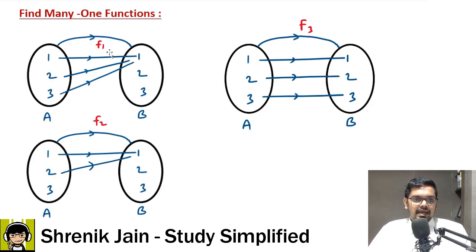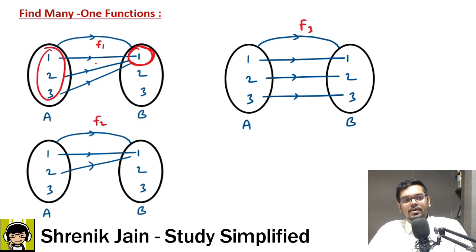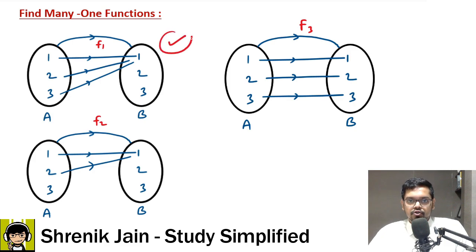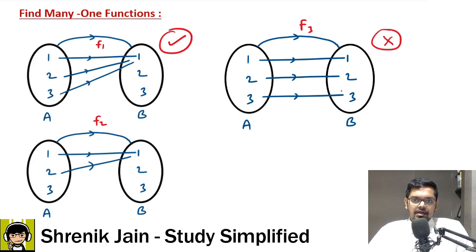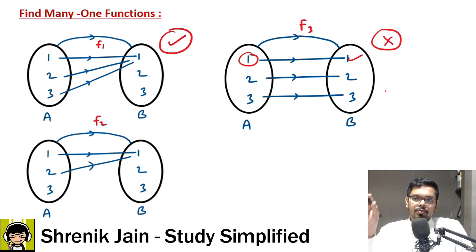For example one: check if it's a function — yes, every input is connected to some output and every input has only one output. It is a many-one function because inputs one, two, and three all give output one — common output. For example two: it is a function, but it's not many-one because every output is different — one gives two, two gives three, three gives three. No common output, so not a many-one function.